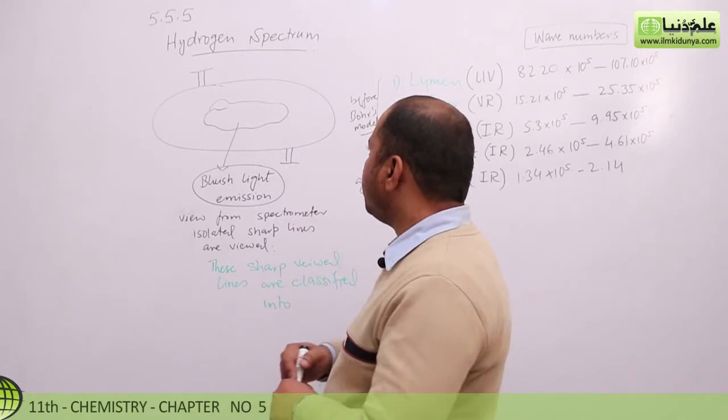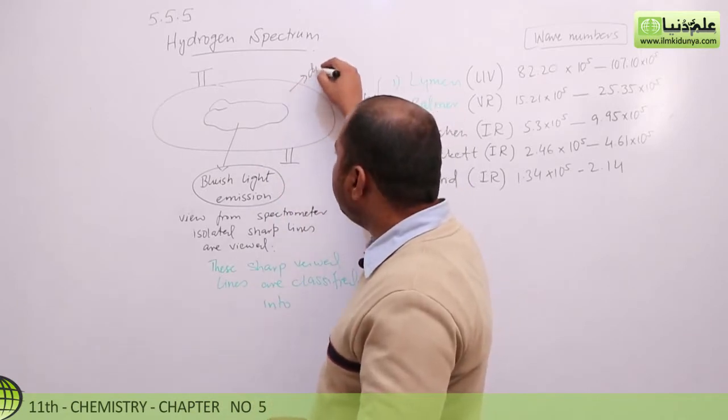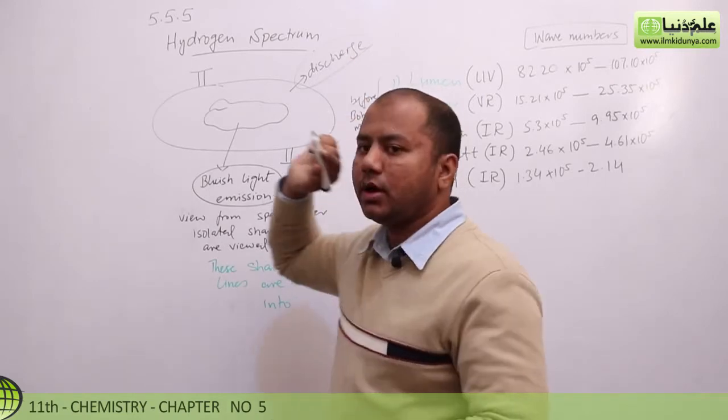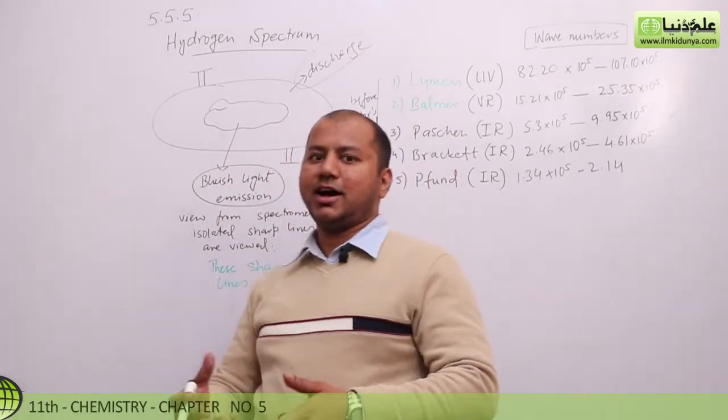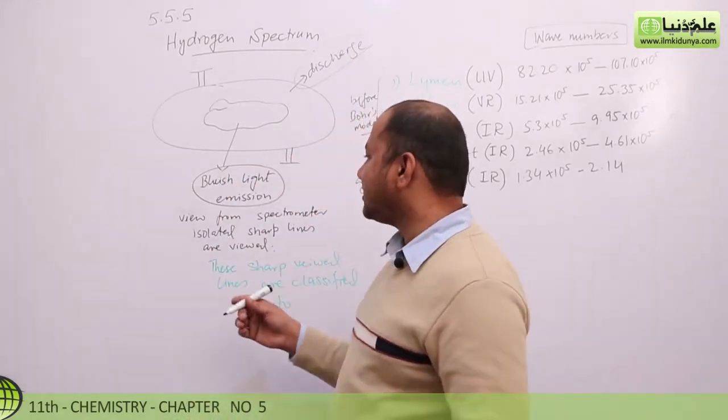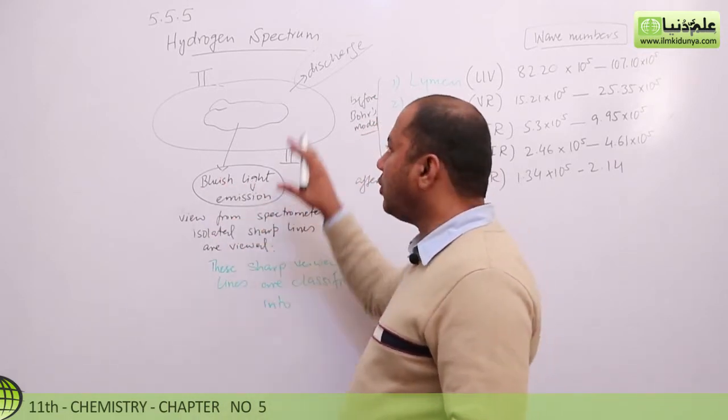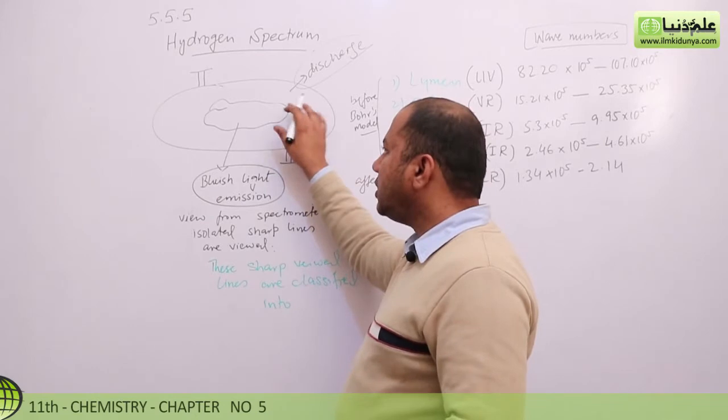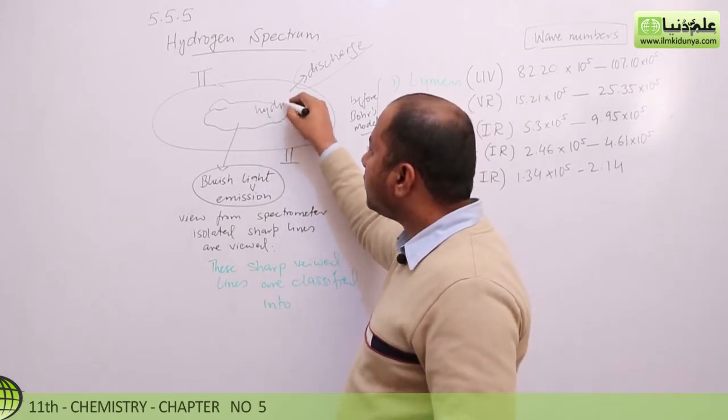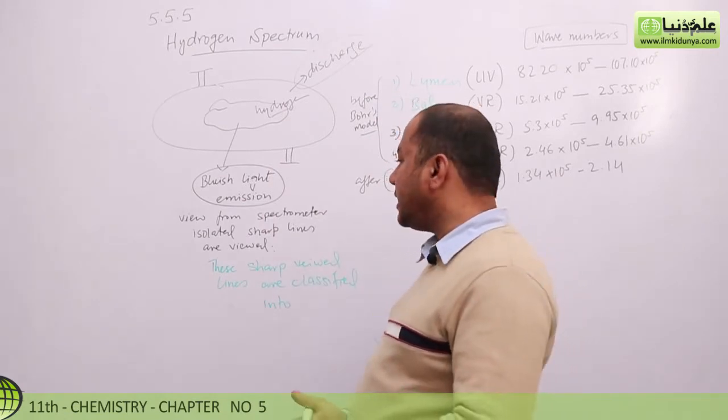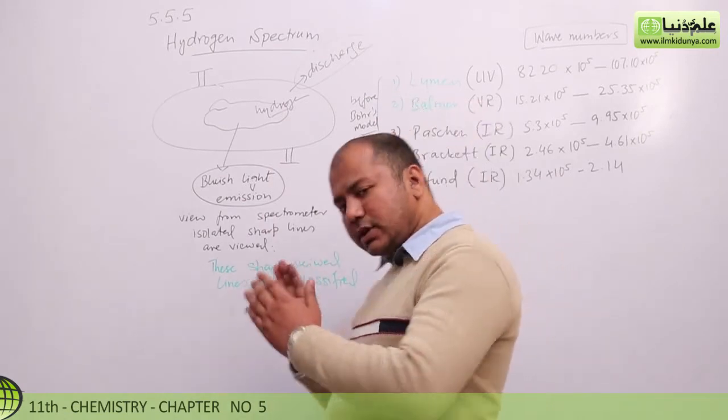We have a discharge tube. I really hope that you will know what discharge tube is. This is something from discharge from here, with low pressure and high voltage. So hydrogen, what will you do? Bluish light will do emission.